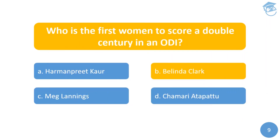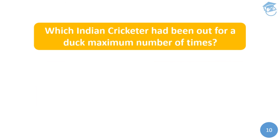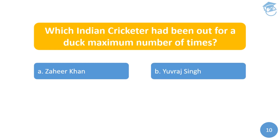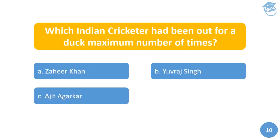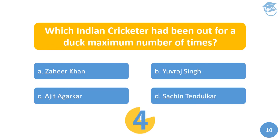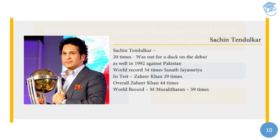The last question: which Indian cricketer has been out for a duck the maximum number of times in ODIs? Your options are A) Zaheer Khan, B) Yuvraj Singh, C) Ajit Agarkar, or D) Sachin Tendulkar. The answer is Sachin Tendulkar — he was out on a duck 20 times in limited overs. The world record is held by Sanath Jayasuriya, who has been out for a duck 34 times.